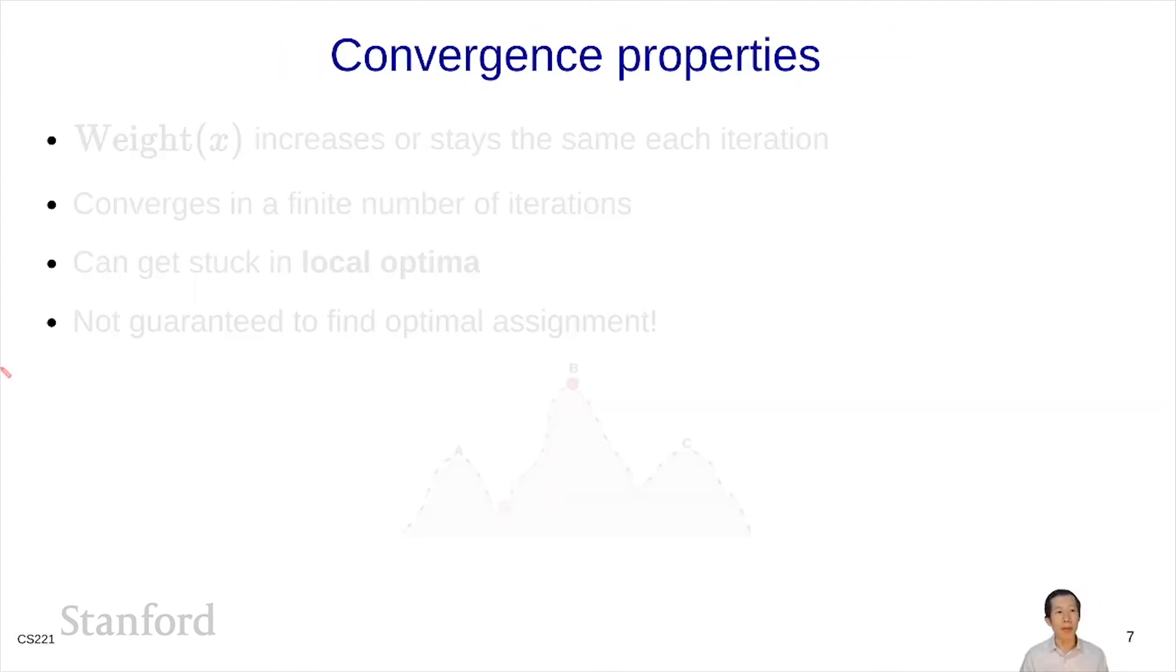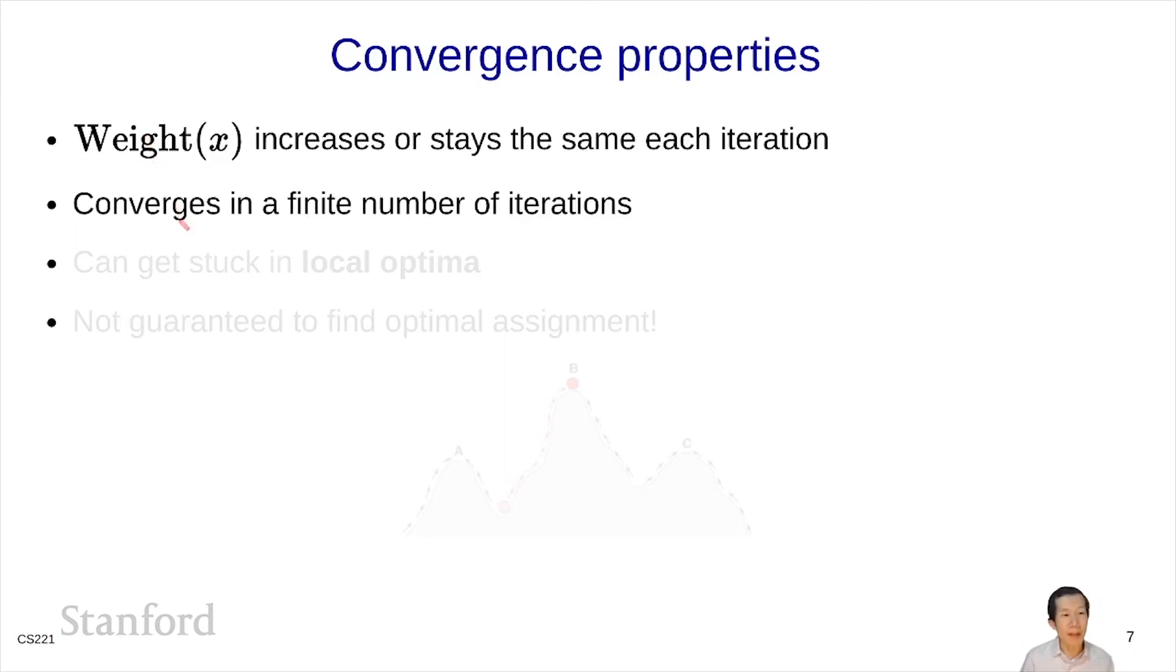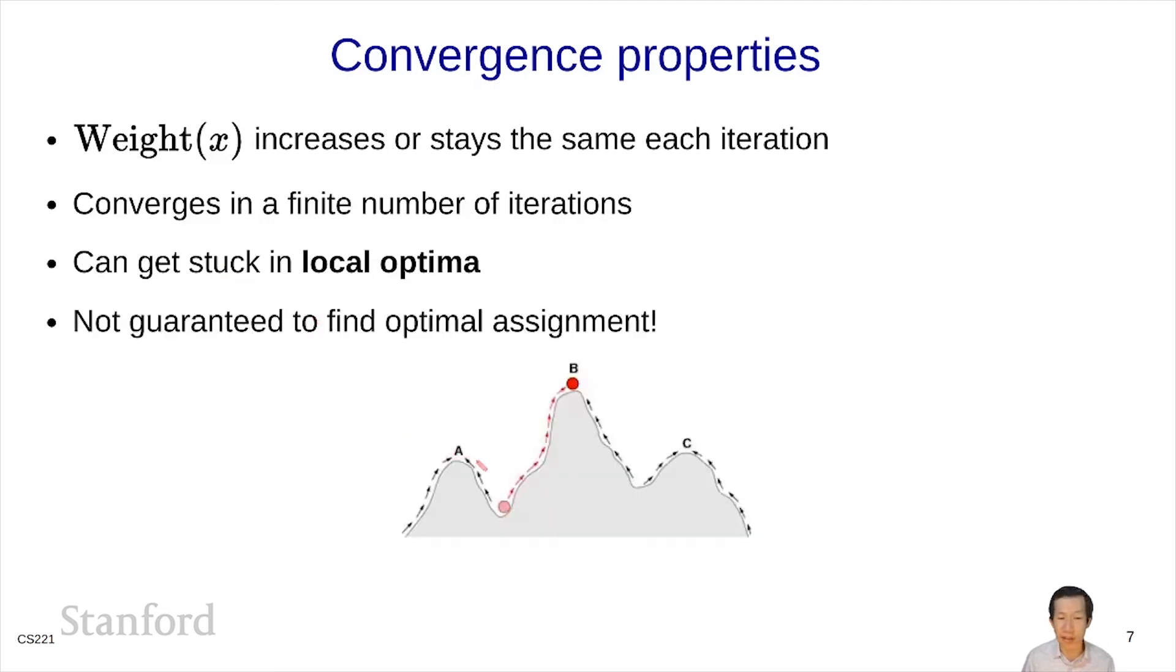Convergence properties: the good news is that the weight of your assignment is not going to go down. It's going to always increase or stay the same each iteration. This is because when you're trying to reassign a variable, you can always choose the old value and maintain the same weight. So any change must be increasing the weight. This means that it converges in a finite number of iterations because there's only a finite number of possible assignments. This can get stuck in local optima as we've seen, and it's not generally guaranteed to find the optimum assignment.